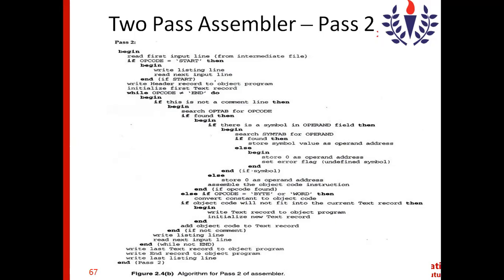After reading the initial START assembler directive, the assembler can determine the name of the program and its starting address. Combined with information from pass one, it can also determine the length of the program. With all this information, the assembler is able to create the header record — the next step is to write the header record to the object program, which contains the program name, starting address, and length.